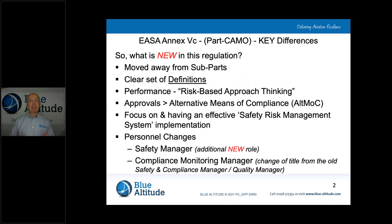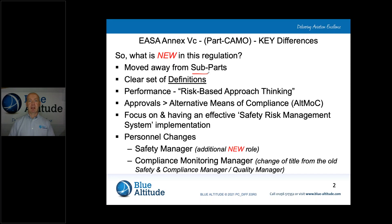So what is new and what's different? If you're familiar with the Part M regulation, within that the structure of the content is built around what we call subparts. Under Part CAMO there are no longer subparts for reference. However, in applying the Part CAMO regulation itself, there is a requirement to refer back to certain sections of Part M — for example, items to do with continuing airworthiness, which is subpart C, and also subpart I, which covers the airworthiness review and the airworthiness review certificate.